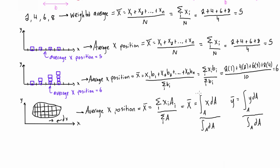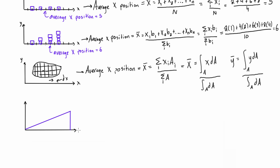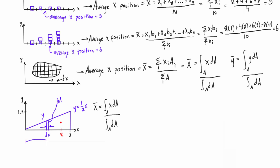Given all that, let's go and find the x-bar component of the centroid for a triangle. We know we need to use the integral expression, but let's talk about what dA is. We're going to slice this triangle into infinitesimally thin slices with a width of dx and a height of y, and that gives us dA. At any point x, the corresponding y is one-half x, so dA is going to equal one-half x times dx.